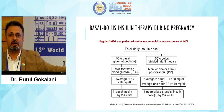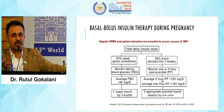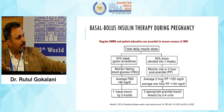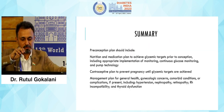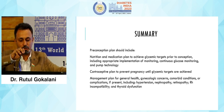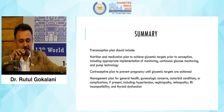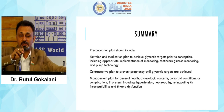For basal bolus therapy, doses are usually divided 50-50, but as pregnancy progresses — which is a state of postprandial hyperglycemia — higher doses of pre-breakfast, pre-lunch, and pre-dinner insulin are required. To summarize, the pre-conception plan should include a nutrition and medication plan to achieve glycemic targets prior to conception, including continuous glucose monitoring and pump technology; a contraceptive plan to prevent pregnancy until glycemic targets are achieved; and a management plan for general health covering gynecologic concerns, hypertension, nephropathy, retinopathy, RH incompatibility, thyroid dysfunction, and anemia.